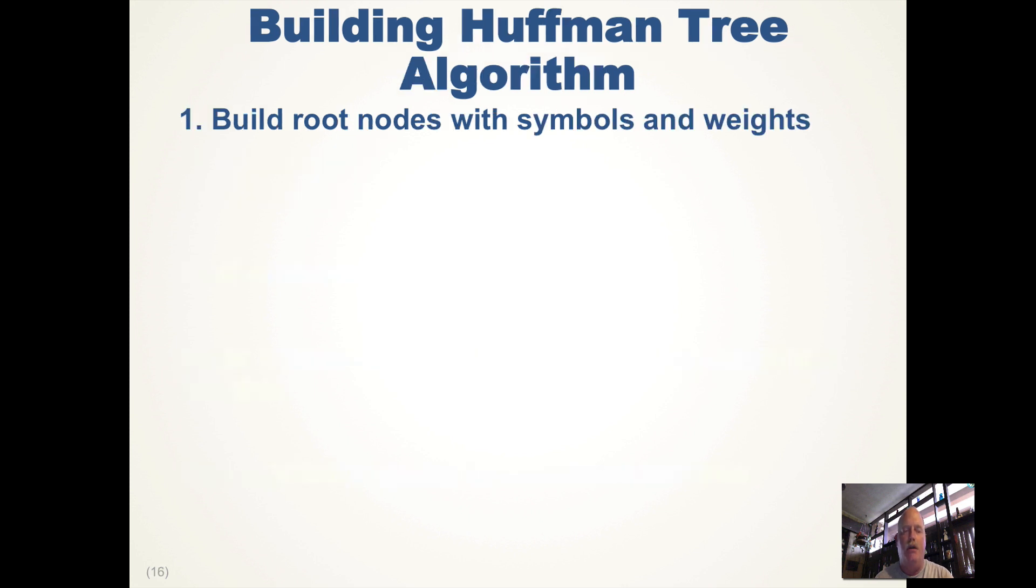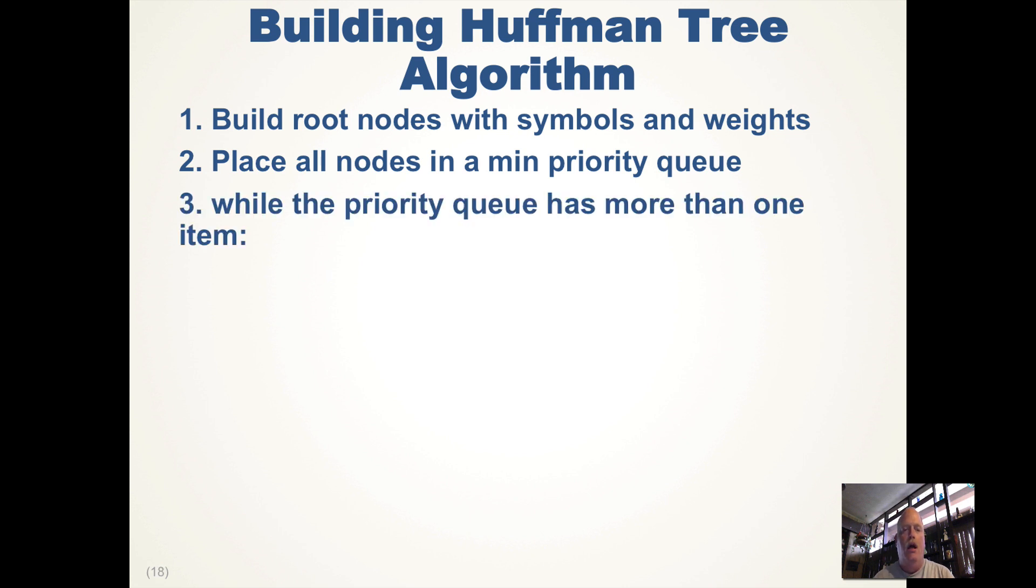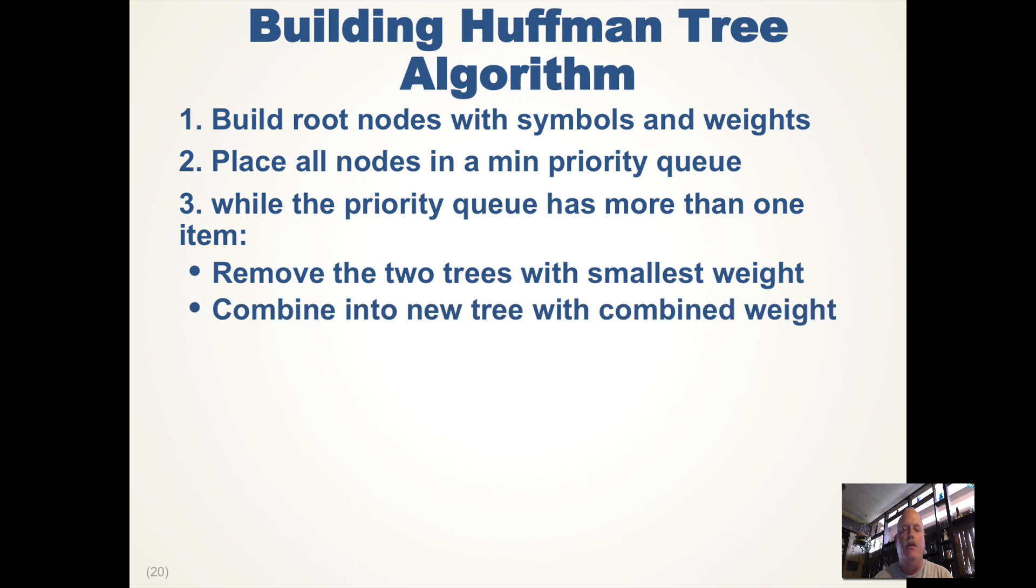Here's the algorithm to build the root nodes: you start with each symbol and you take the symbol and the weight. You place all these nodes into a minimum priority queue because we want to pull the lowest frequency items first to build the tree. Then while the priority queue has more than one item, you remove the two lowest trees with the smallest weight, combine them into a new tree that has the root with a combined weight of the left and right subtree, and then you add the tree back into the priority queue.